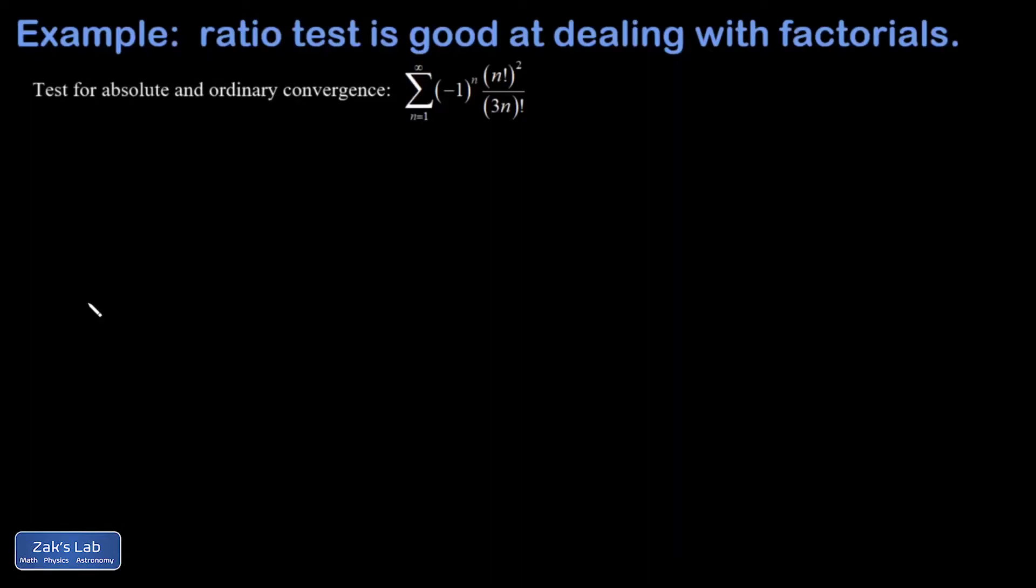Whenever you see a series with a bunch of factorials in it, you should think about using the ratio test as your first plan of attack. This happens to be an alternating series, and the way you would ordinarily start investigating convergence for an alternating series is by looking for absolute convergence, because if you've got that, then you have ordinary convergence as well, and you can save some work.